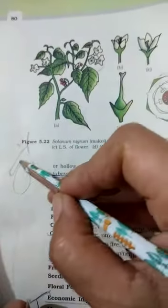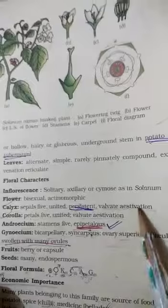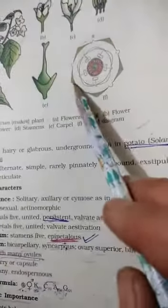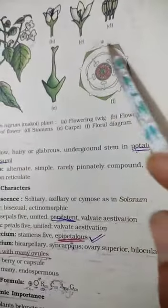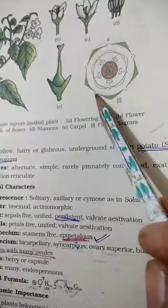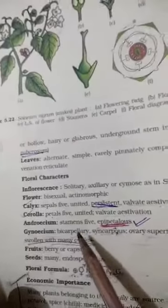These are the calyx. One, two, three, four, five. And valvate means they are not overlapping each other, they are not touching. But this bracket is showing that they are united, meaning gamosepalous condition is there.